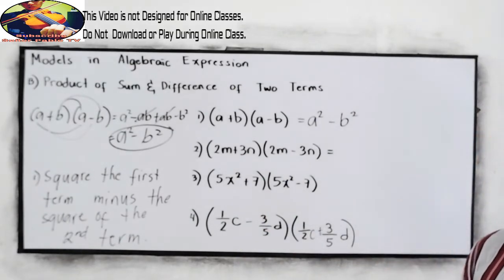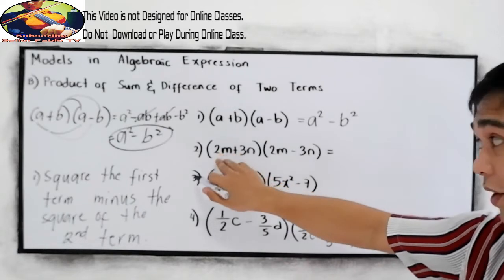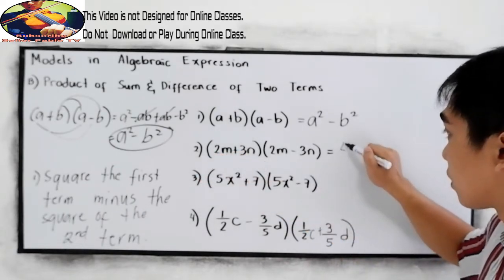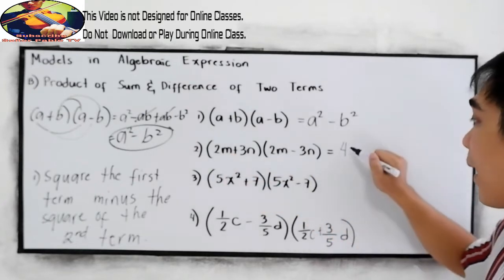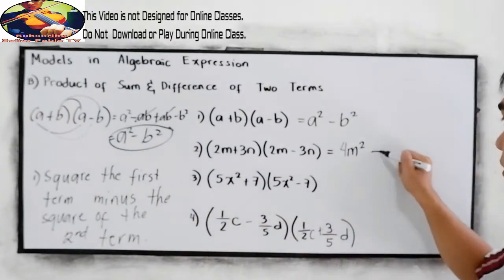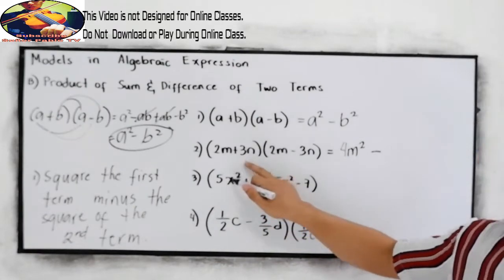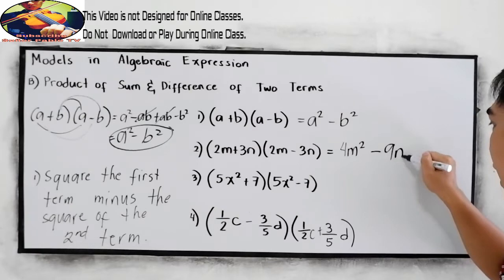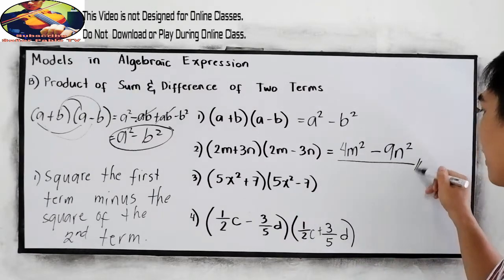Second example. So square the first term, 2M squared, that is 4M squared, minus, square the second term, 3N squared, that is 9N squared. This will be our product.